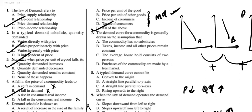The demand curve for a commodity is generally drawn on the assumption of ceteris paribus — all other things remain constant. Taste, income, and other prices all remain constant. So the answer is B.